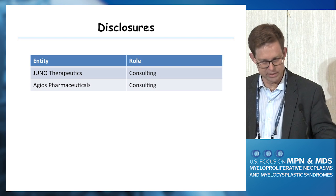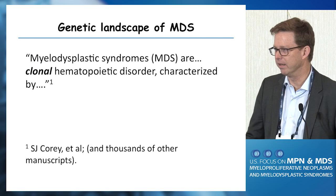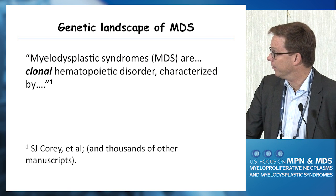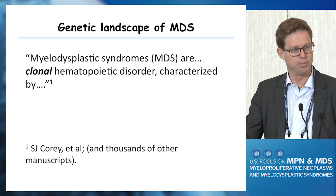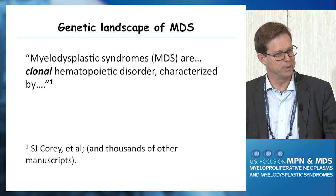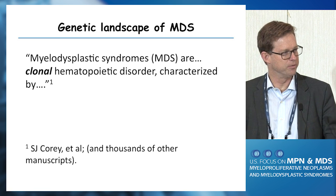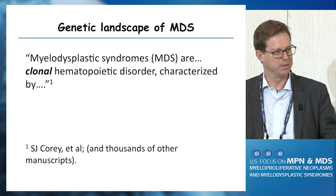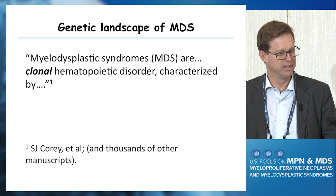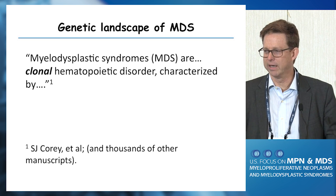So a couple of disclosures here, neither of which are going to be at all relevant to what I'm talking about. I'm going to start with the following statement: myelodysplastic syndromes are clonal hematopoietic disorders characterized by et cetera, et cetera. I'm starting here because a phrase like this or some variation on it appears in virtually every paper written on MDS, often the first sentence of the paper. I've cited one example at random here, but literally thousands of papers begin this way. In the context of what we learned about genetics, I just wanted to kind of drill down on this a little bit.